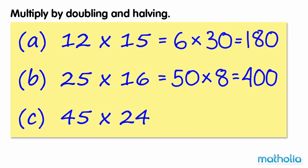Let's find 45 times 24. Double 45 is 90. And half of 24 is 12. 9 times 12 equals 108, so 90 times 12 equals 1080.